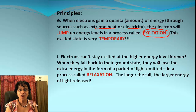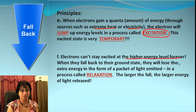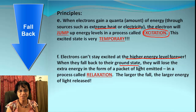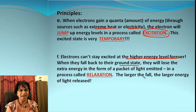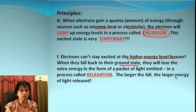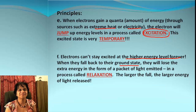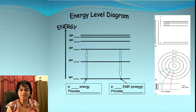Electrons cannot stay excited at such a high energy level forever. So when they fall back to ground state, they will lose that extra energy and a packet of light is emitted. The process is called relaxation, and the larger the fall, the larger is the energy of light released.